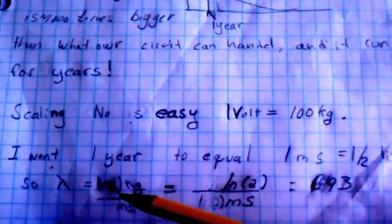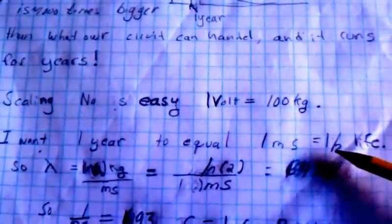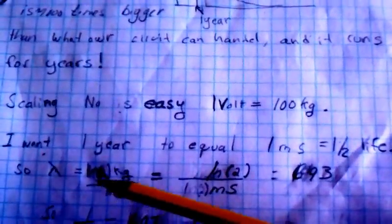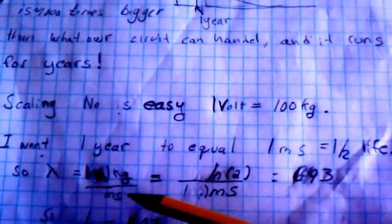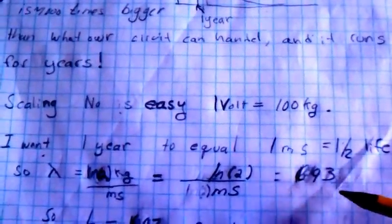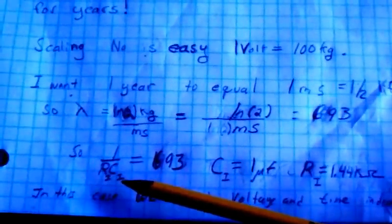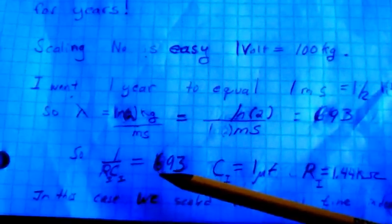To scale the time constant, I would want one millisecond to equal the half-life. Therefore, I can have a log two divided by a millisecond or 693 for lambda. Then I can set my RC constants to 693.